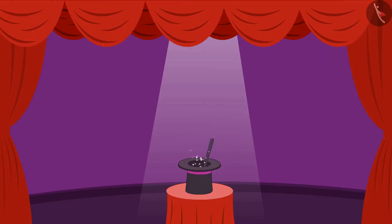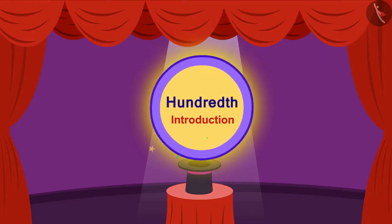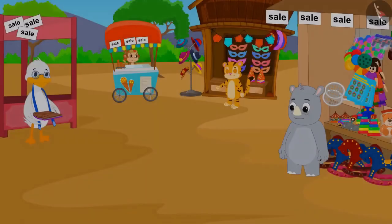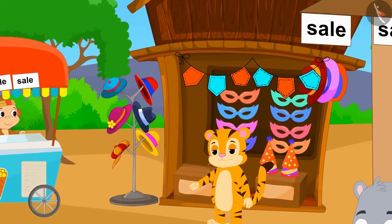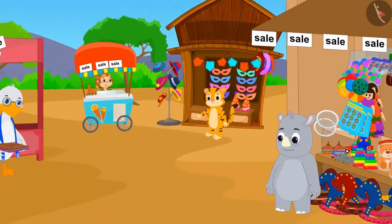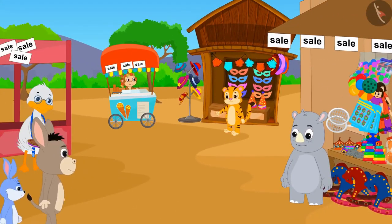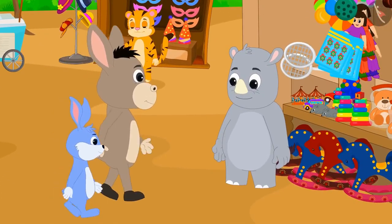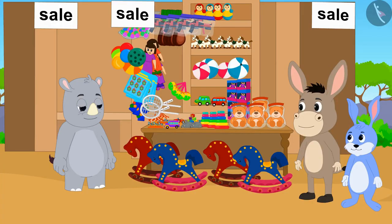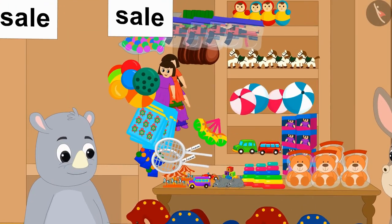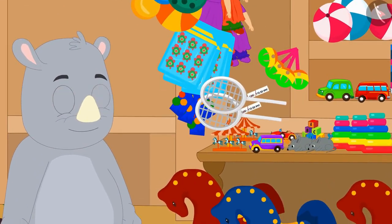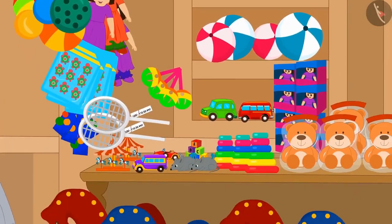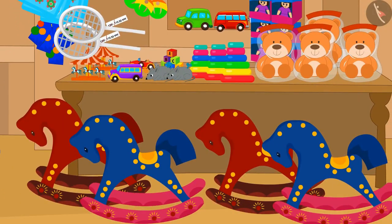Hello children! In this video we will learn about what is hundredth. There is a sale going on in several places in the Champapur market. Bunny and Bhola have come to the market to shop. First they have come to Gaggoo's shop to buy toys. There is a huge discount on toys at Gaggoo's shop in the sale.